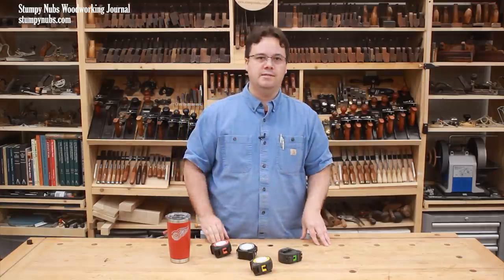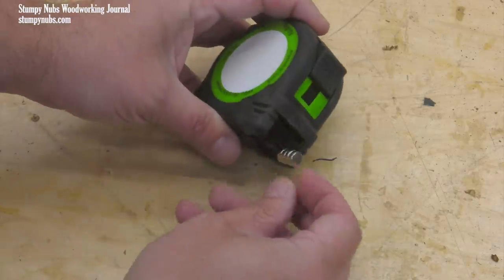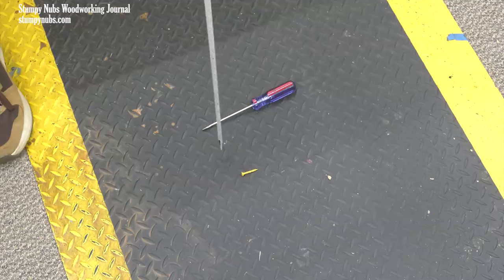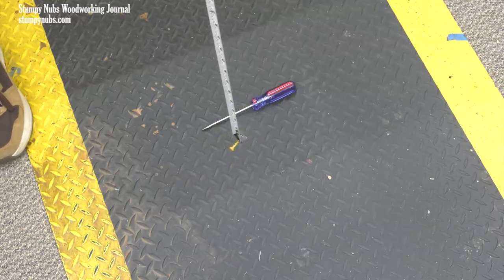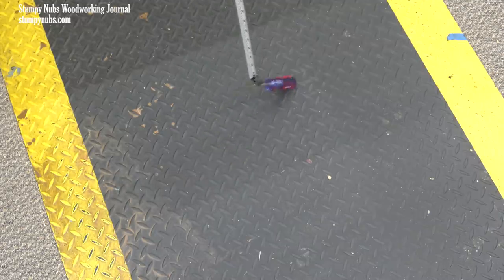Believe it or not, a measuring tape's best friend might be a magnet. Keep a couple of rare earth magnets attached to maybe the rivets on your tool belt, and the next time you drop something, the measuring tape can become a pickup tool while you stay on the ladder.